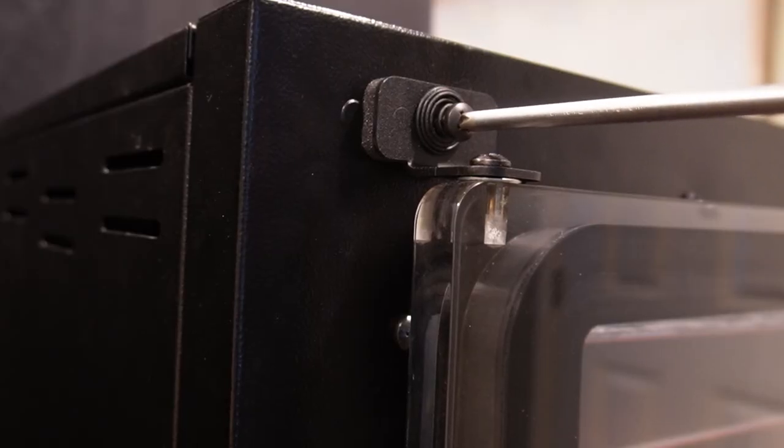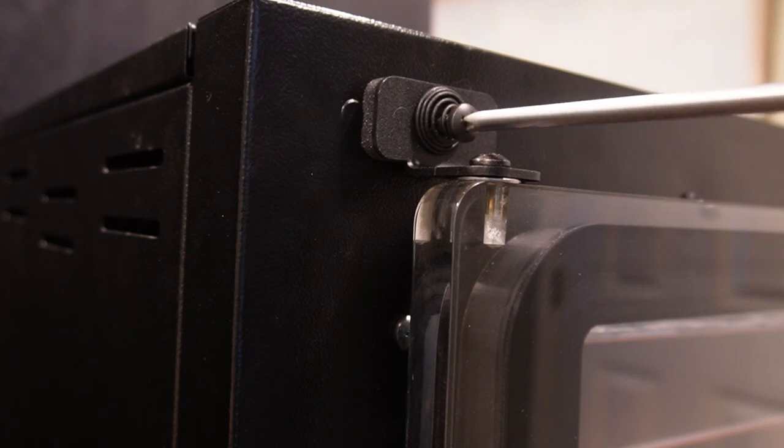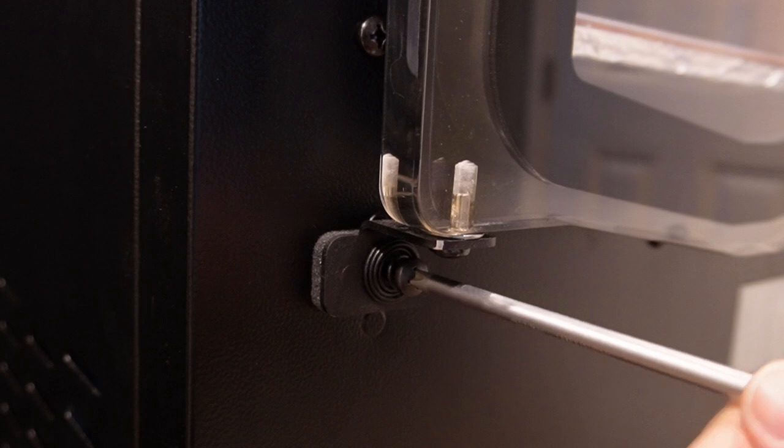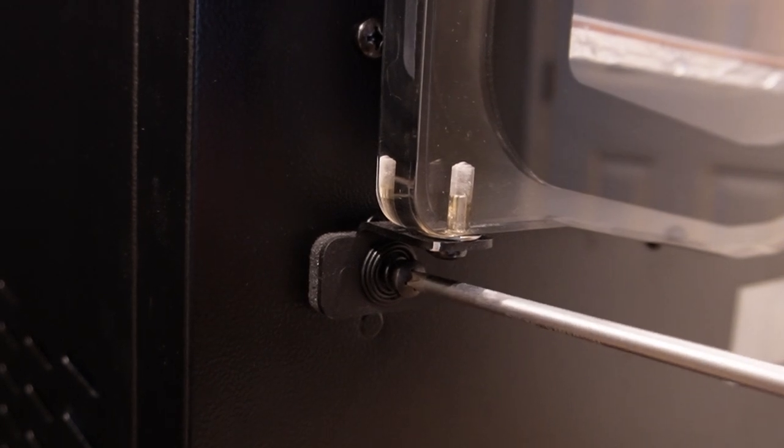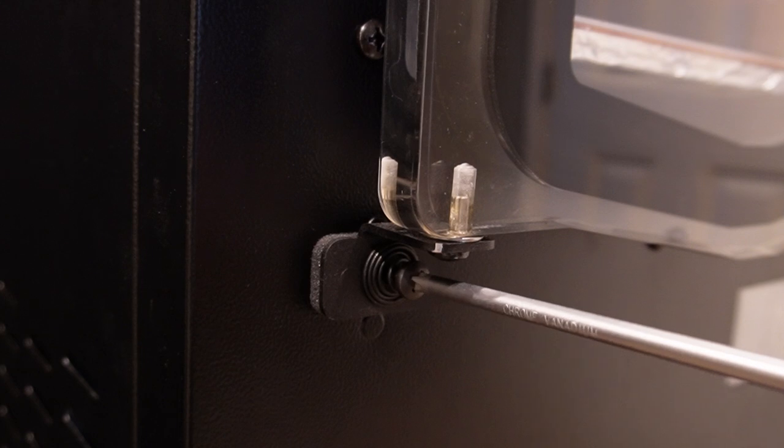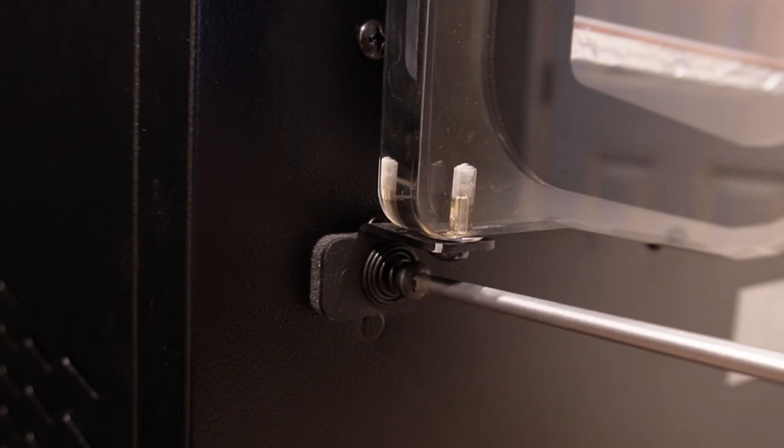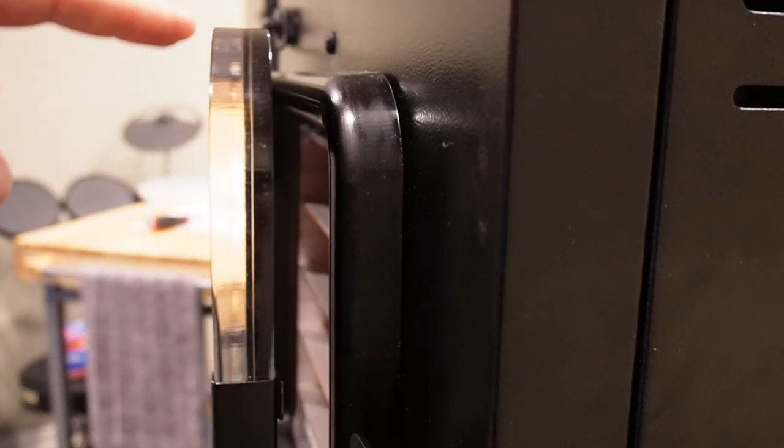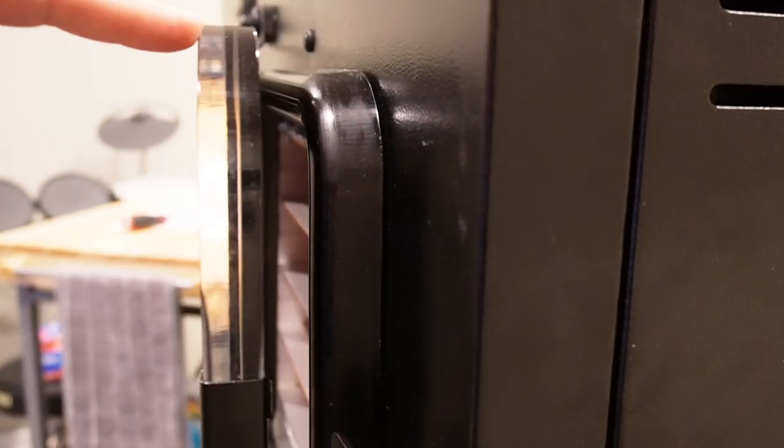Using your Phillips screwdriver again, turn the hinge plate screws counterclockwise to loosen them a full turn and a half. I often have to count the tines on the screwdriver six times to make sure I do this correctly. When you are done, your door should spring open just like this, but still be able to close.